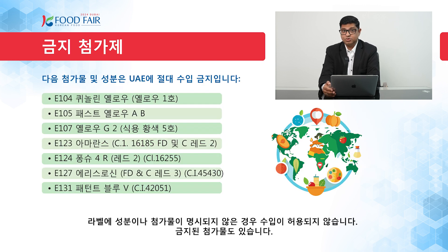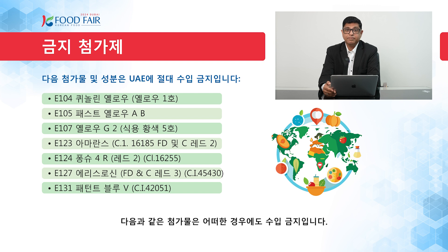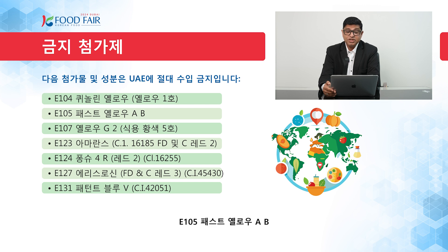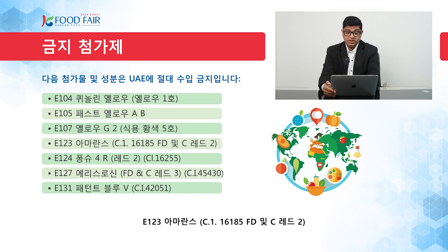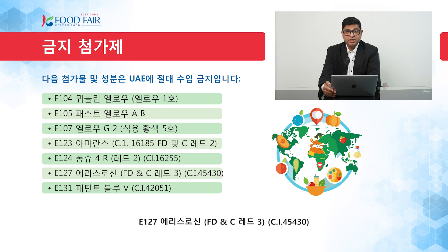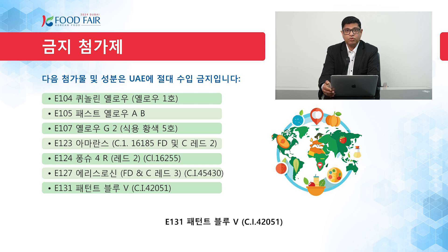There are certain banned additives. The following additives are banned in Dubai: E104 quinoline yellow (yellow number 1); E105 fast yellow AB; E107 yellow G2 (food yellow 5); E123 amaranth (C.I. 16185, FD&C red 2); E124 ponceau 4R (red 2, C.I. 16255); E127 erythrosine (FD&C red 3, C.I. 45430); and E131 patent blue V (C.I. 42051).